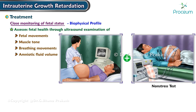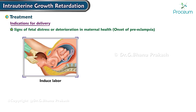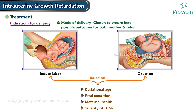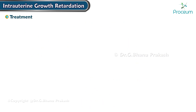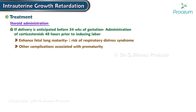Signs of fetal distress or deterioration in maternal health, such as the onset of preeclampsia, necessitate immediate evaluation for potential early delivery. The decision to induce labor or perform a cesarean delivery is based on gestational age, fetal condition, maternal health, and severity of intrauterine growth restriction. If delivery is anticipated before 34 weeks of gestation, administration of corticosteroids 48 hours prior to inducing labor can significantly enhance fetal lung maturity, reducing the risk of respiratory distress syndrome and complications associated with prematurity.